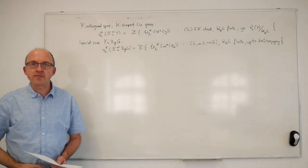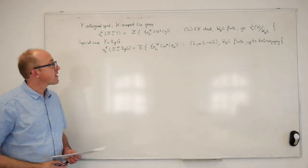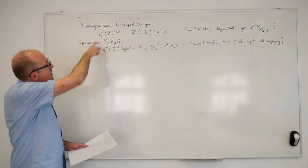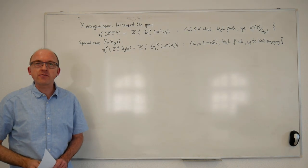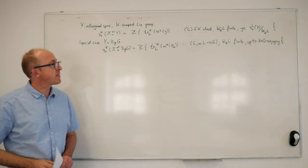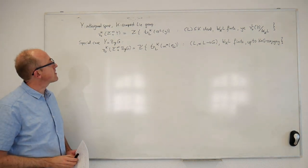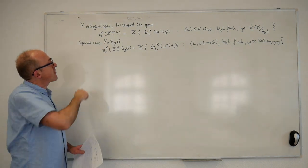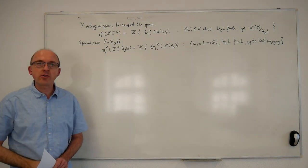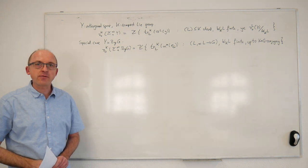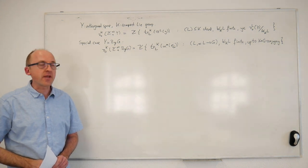Welcome to lecture number 7. Last time I proved these results. First of all, we talked about unreduced suspension spectra of orthogonal spaces, and I determined the K-equivariant zero-dimensional homotopy group in terms of unstable equivariant homotopy information of the orthogonal space Y.